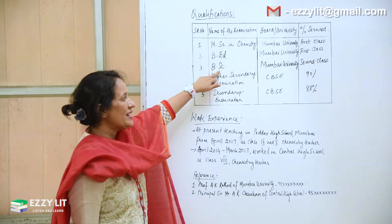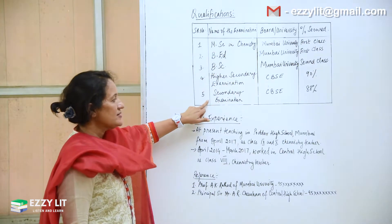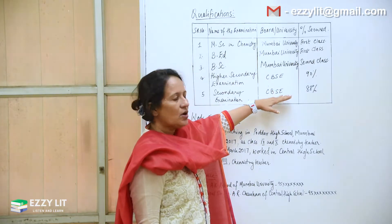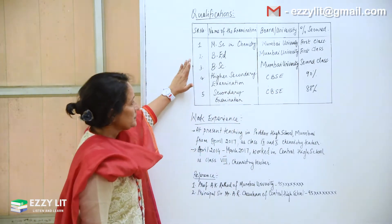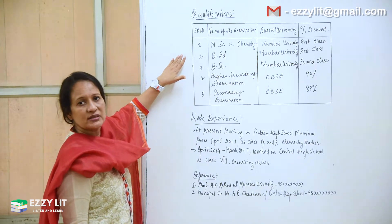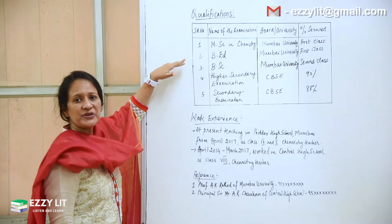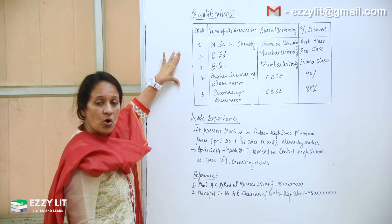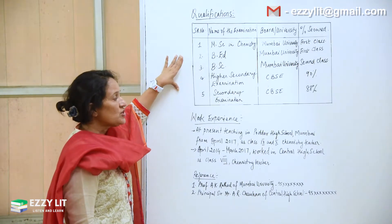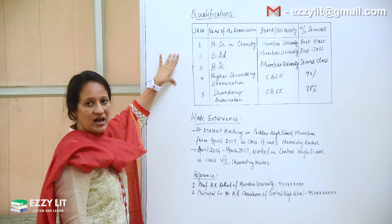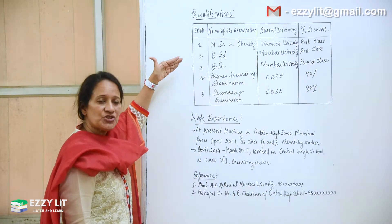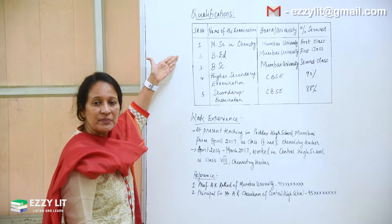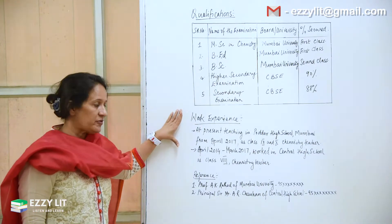Then graduation — I've put B.Sc. — then Higher Secondary and Secondary. For these two you write the board: CBSE, your state board, or whatever is applicable. If it's a teacher's job it's usually B.Ed.; if it's a professor or higher post in an educational institution you can also add Ph.D. Relate to what the question asks — if it's regarding a manager you can add an MBA with a B.Com degree, BBA, and so on.